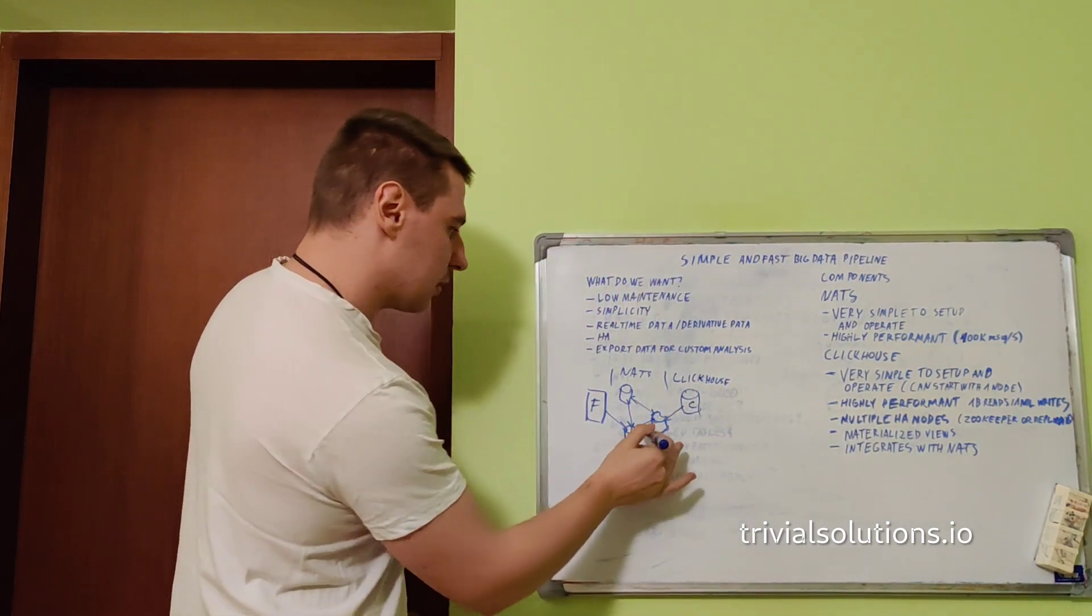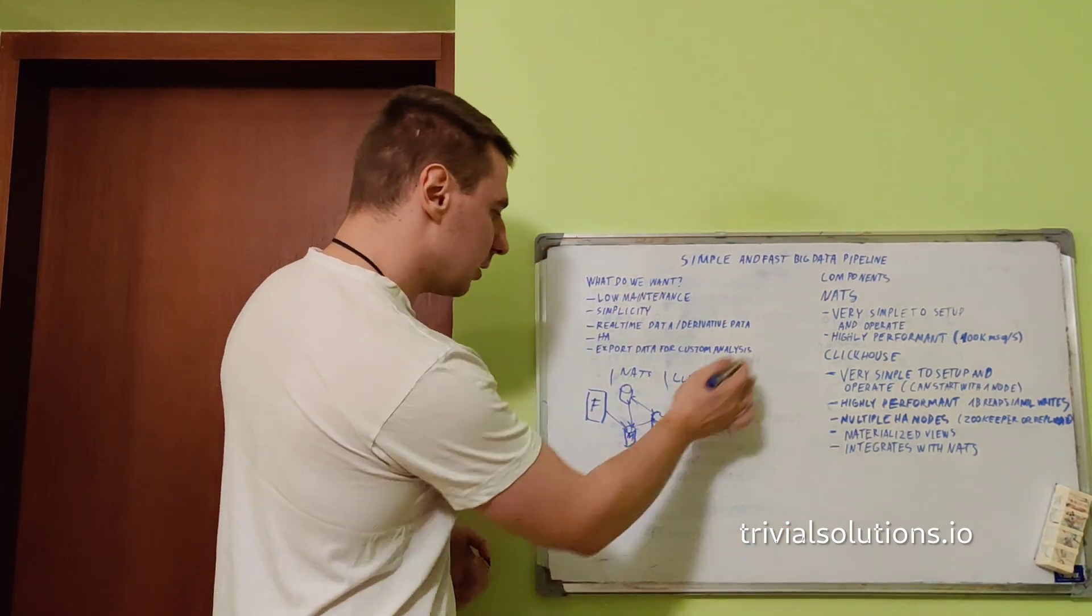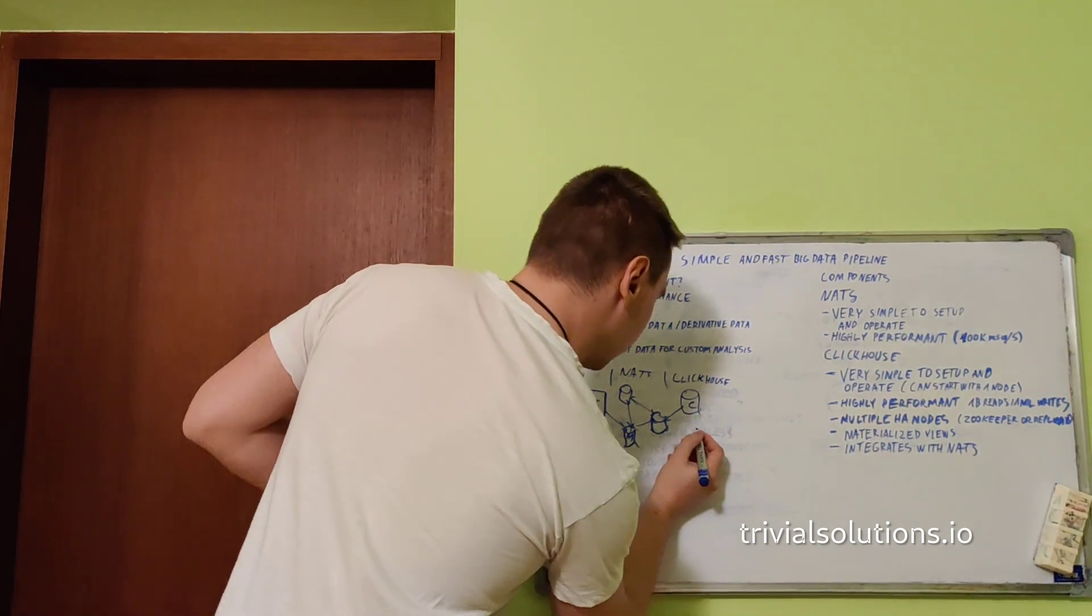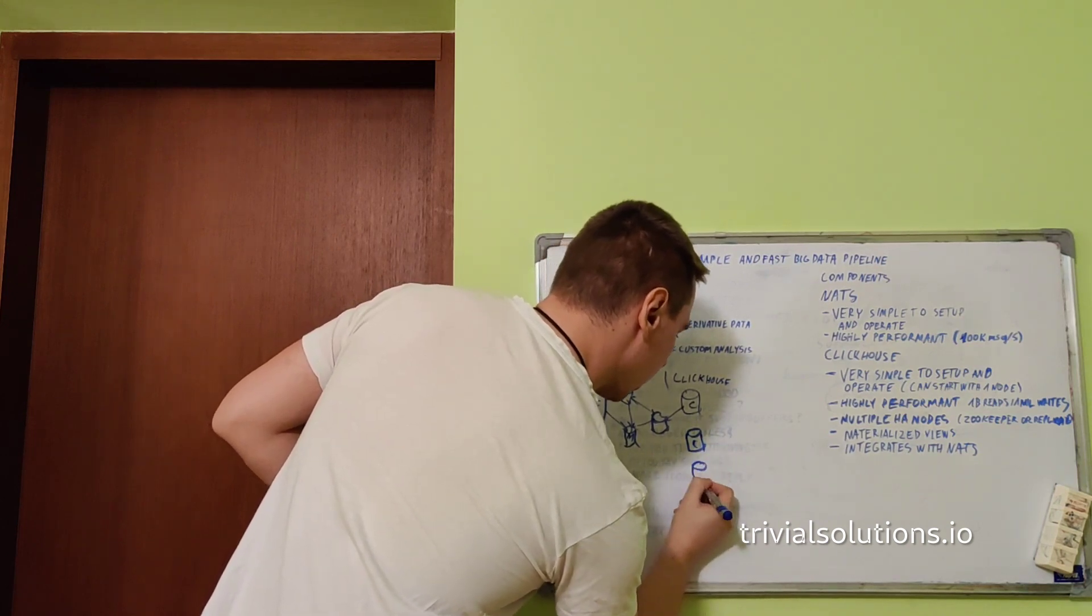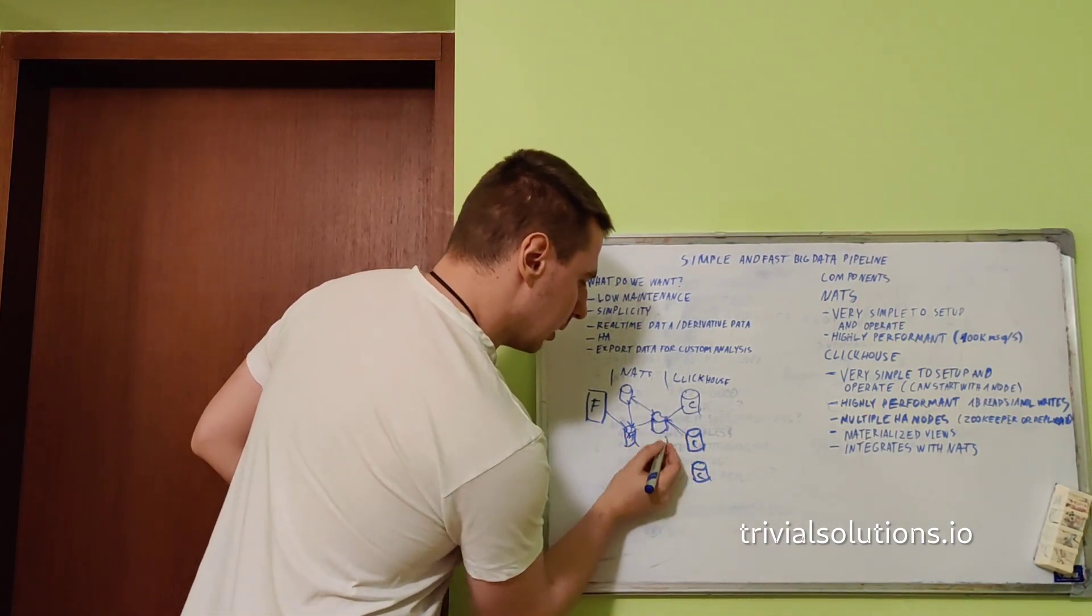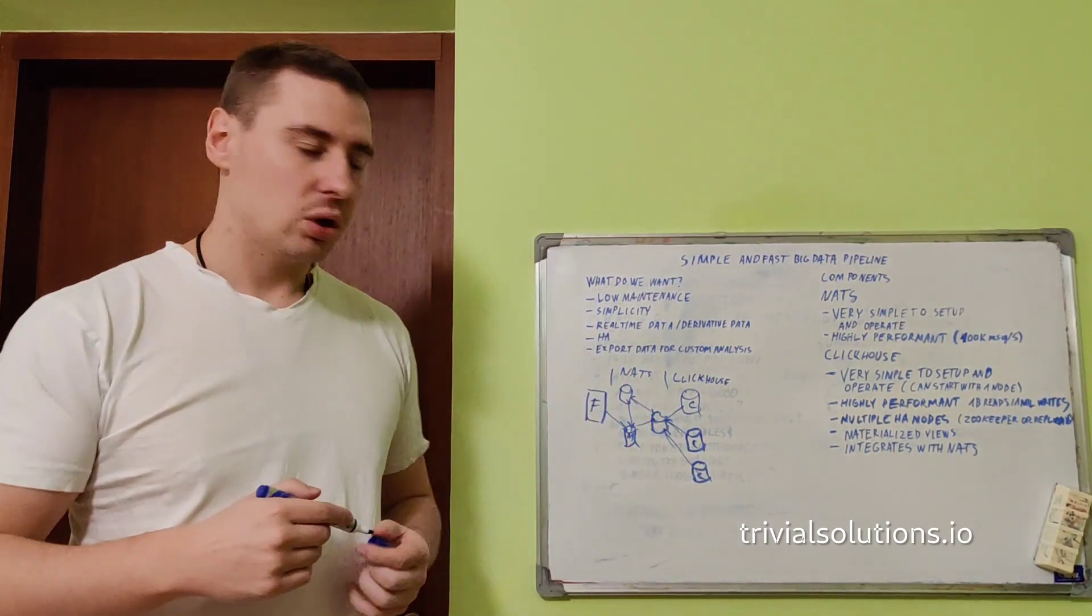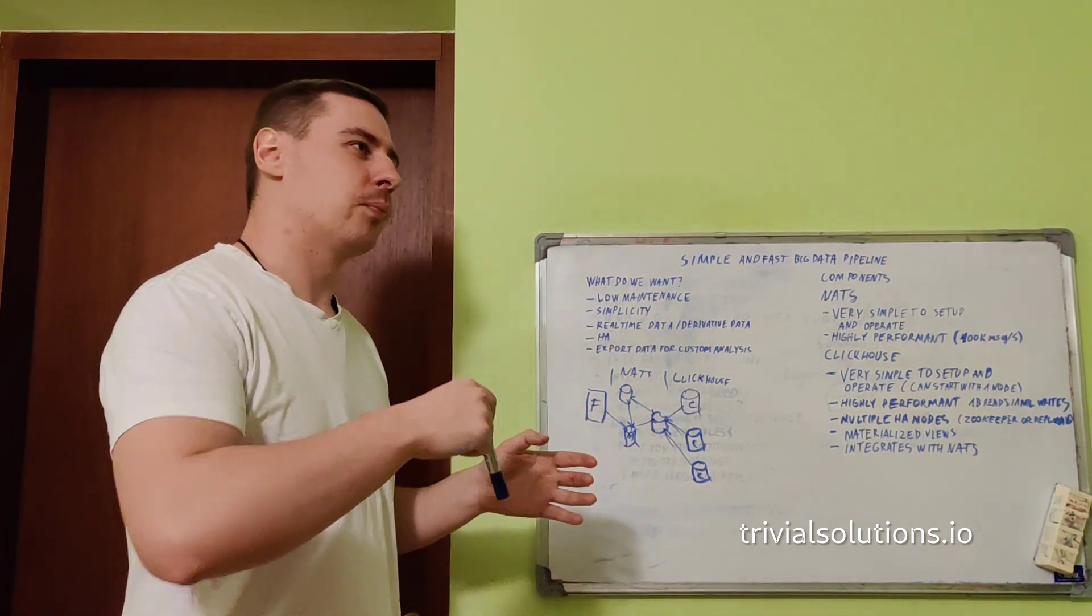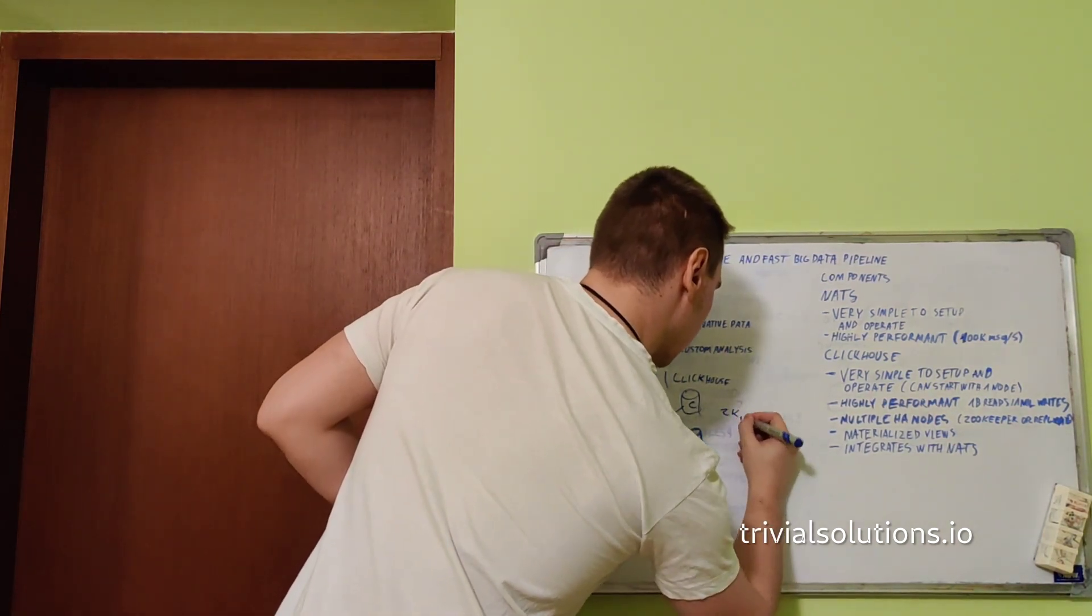You can just start with a single instance if it's some data you don't necessarily care about, even if it's lost. If it's like some metrics or you just want to play around, you can start with one instance. You point ClickHouse to NATS - this is your frontend and this is ClickHouse. ClickHouse simply takes from those streams. You make it subscribe and if you want more copies, if you want high availability, no problem - you can deploy more instances.